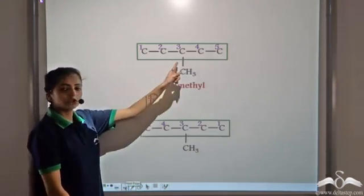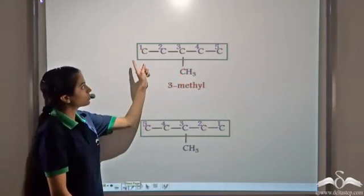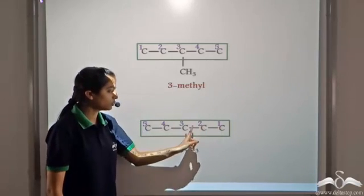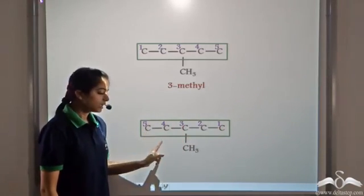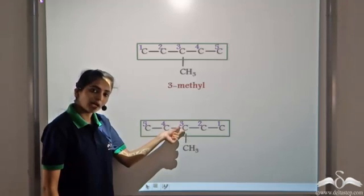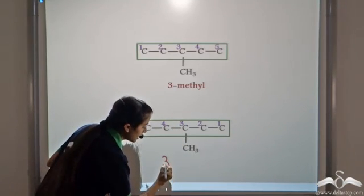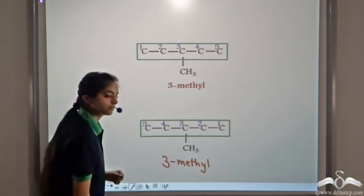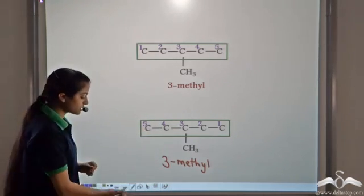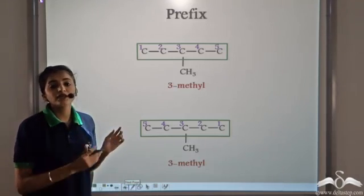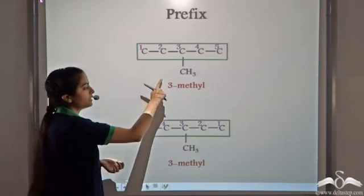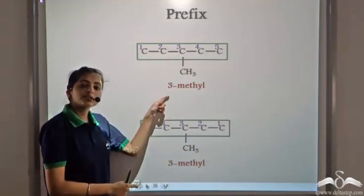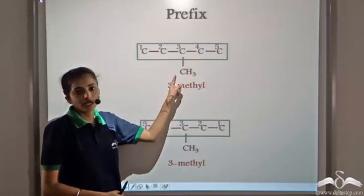So the name for this substituent becomes 3-methyl. Now if we number the carbon chain from the opposite side — starting from the right — our substituent is again present at carbon number 3, so this also gets the name 3-methyl. The naming of the substituents gives the prefix to the name of the compound. So 3-methyl is the prefix for this organic compound.